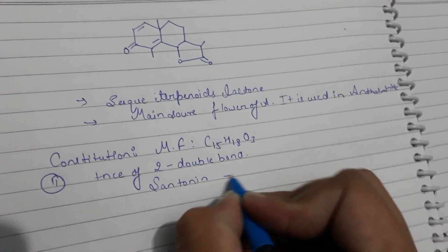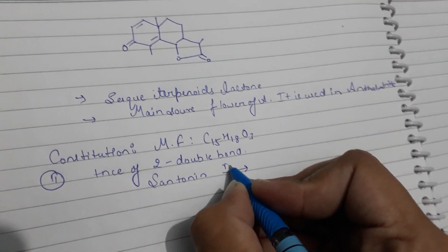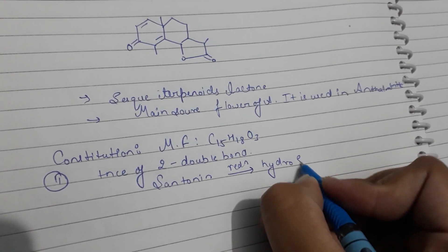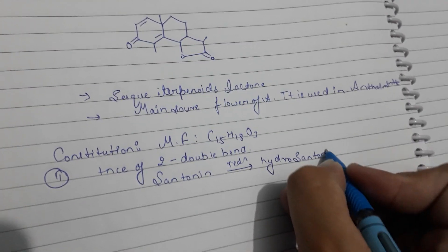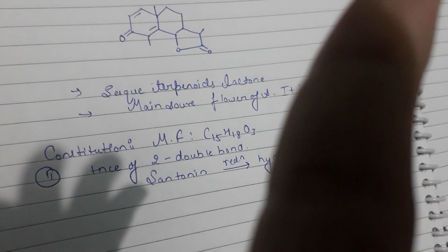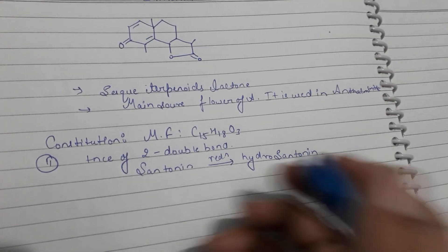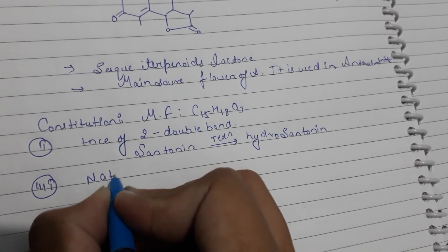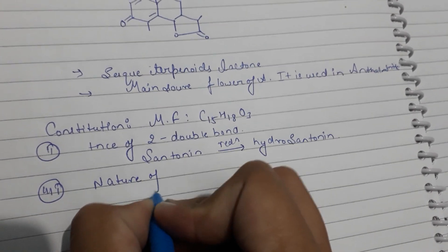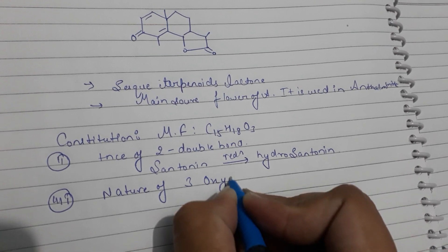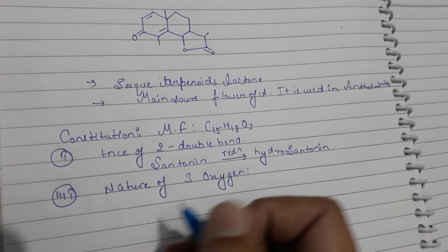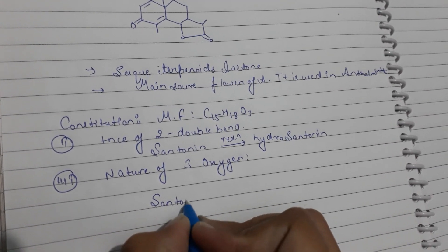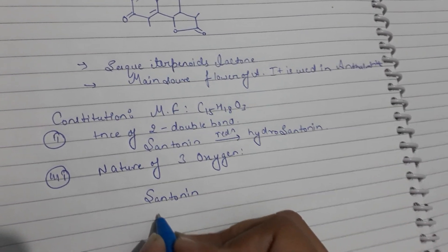On catalytic reduction, Centonin gives hydrogenated Centonin, which confirms the presence of 2 double bonds. The third point concerns the nature of the 3 oxygen atoms in Centonin, confirmed by specific reactions.